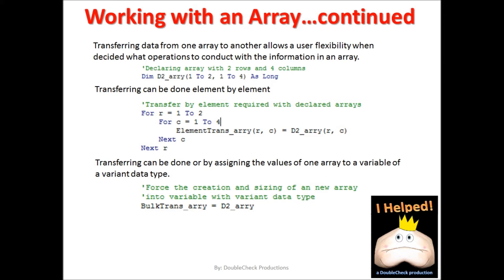While transferring data one element at a time gives us control, it is relatively slower. The other way to transfer data from one array to another is faster, but we have no control over the data transfer — essentially we're just making a copy of the array. You can think of this as an instant or bulk transfer, done by treating both arrays as variables. Keep in mind that the receiving array must be of a variant data type for this to work.